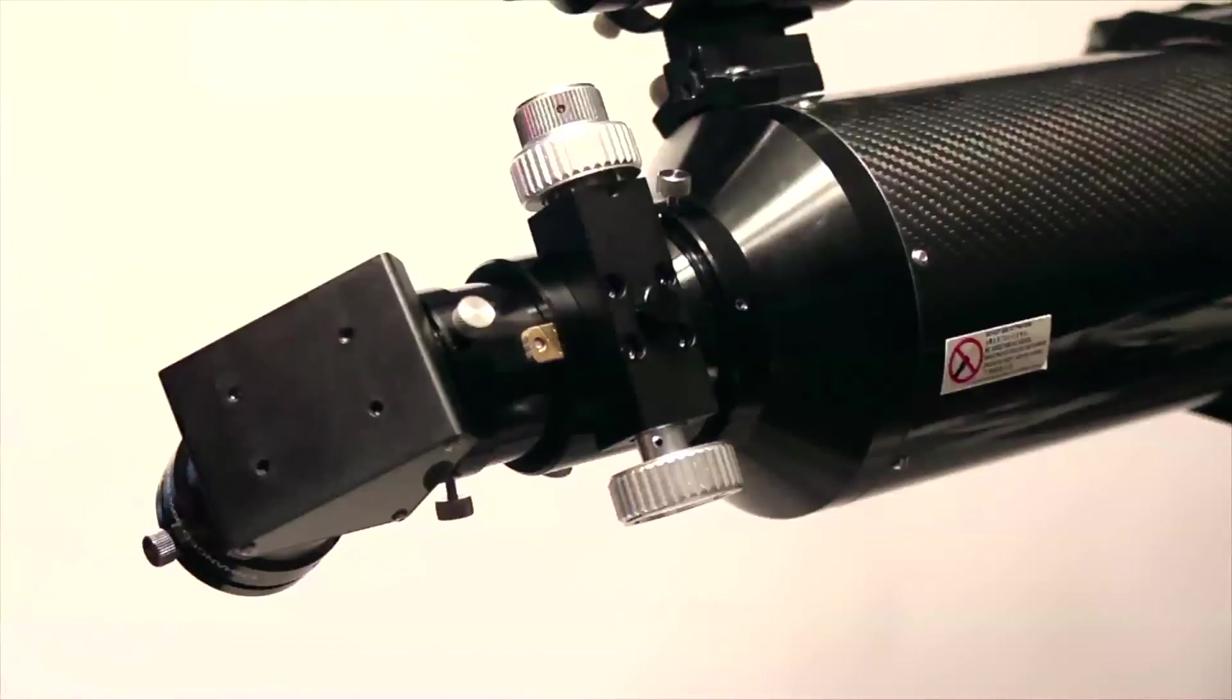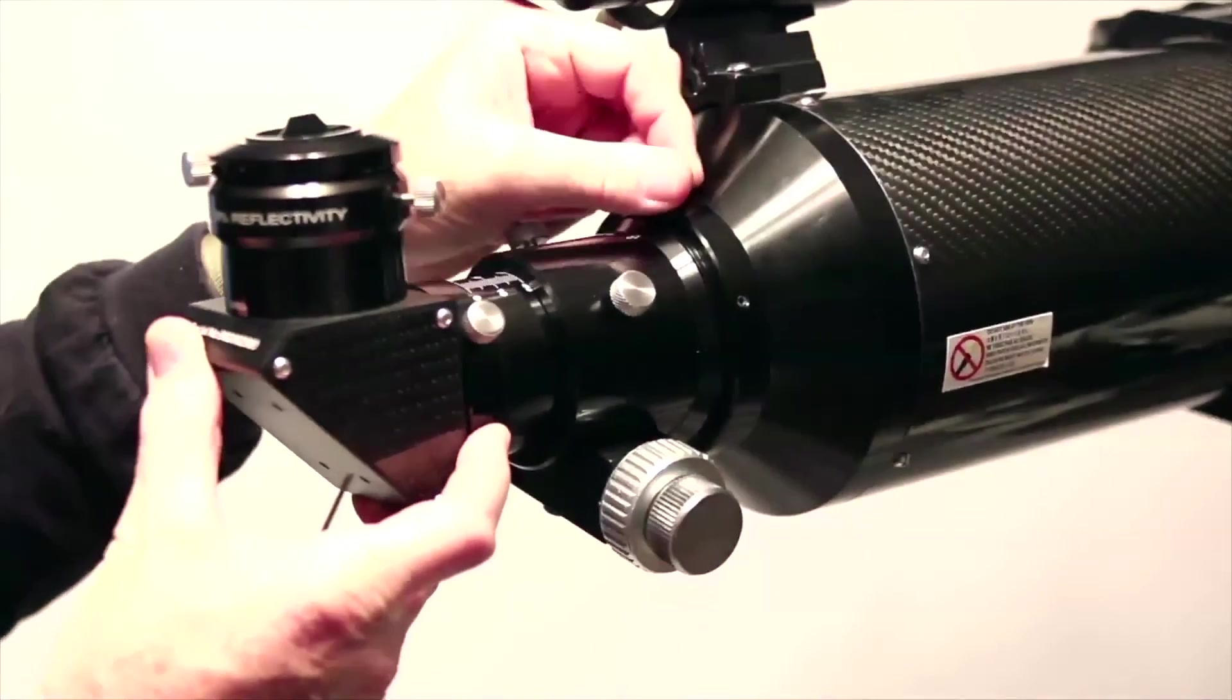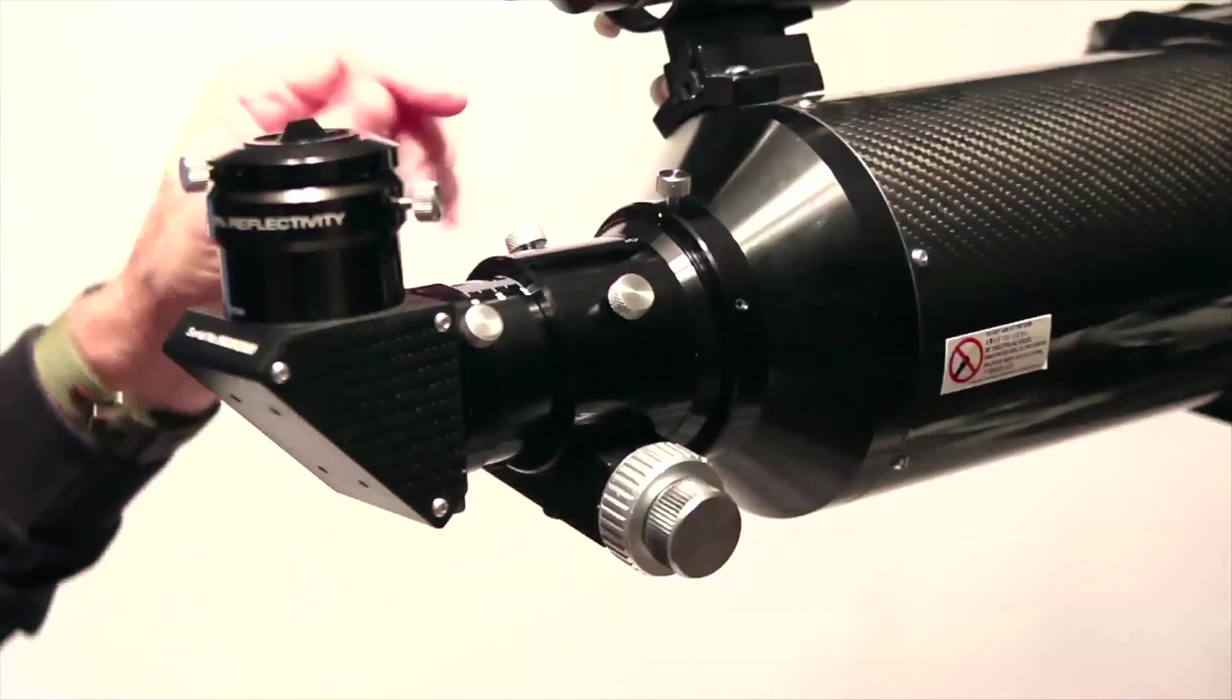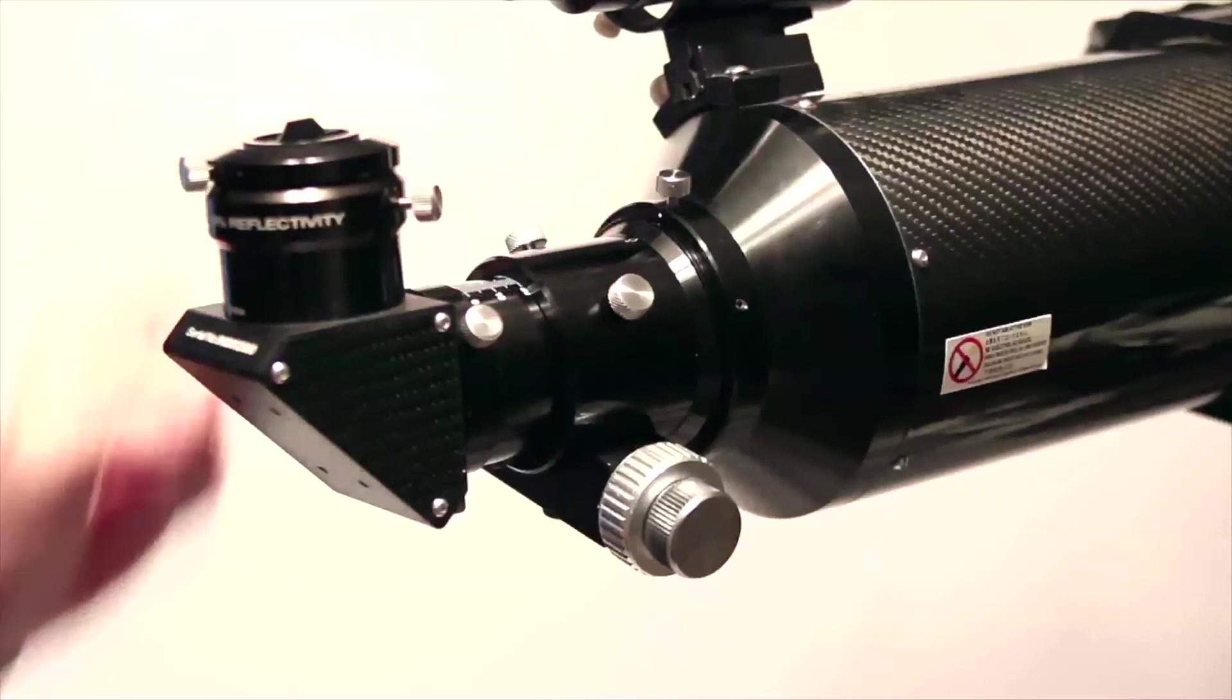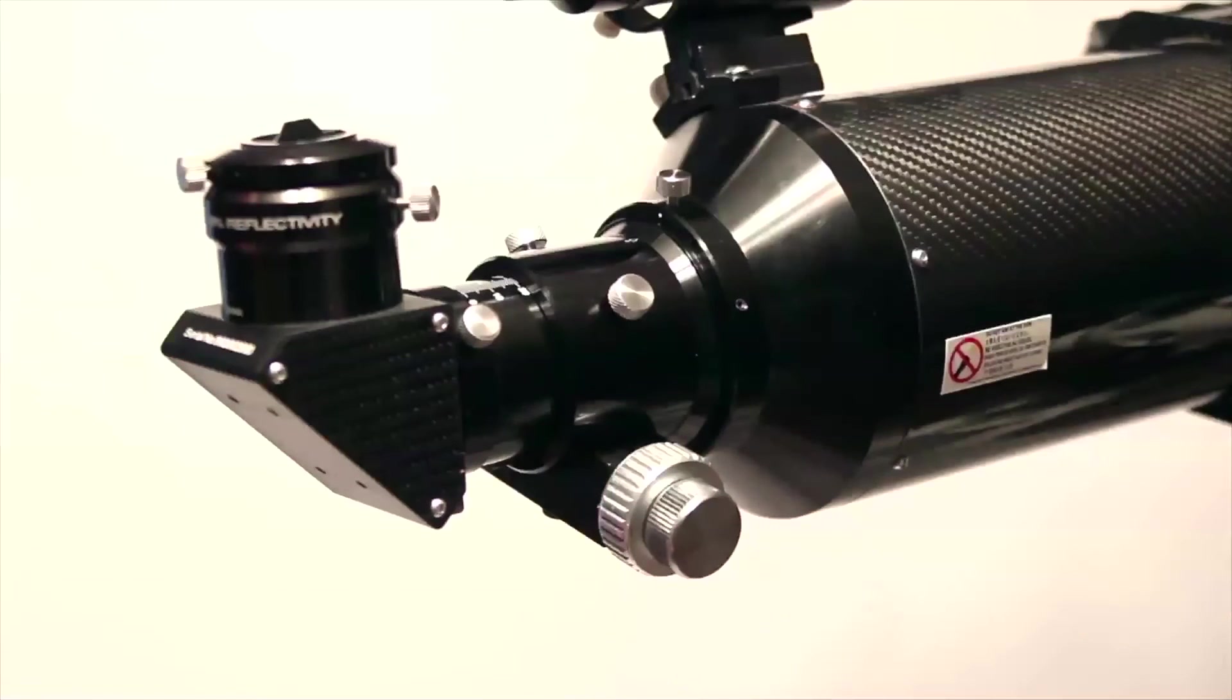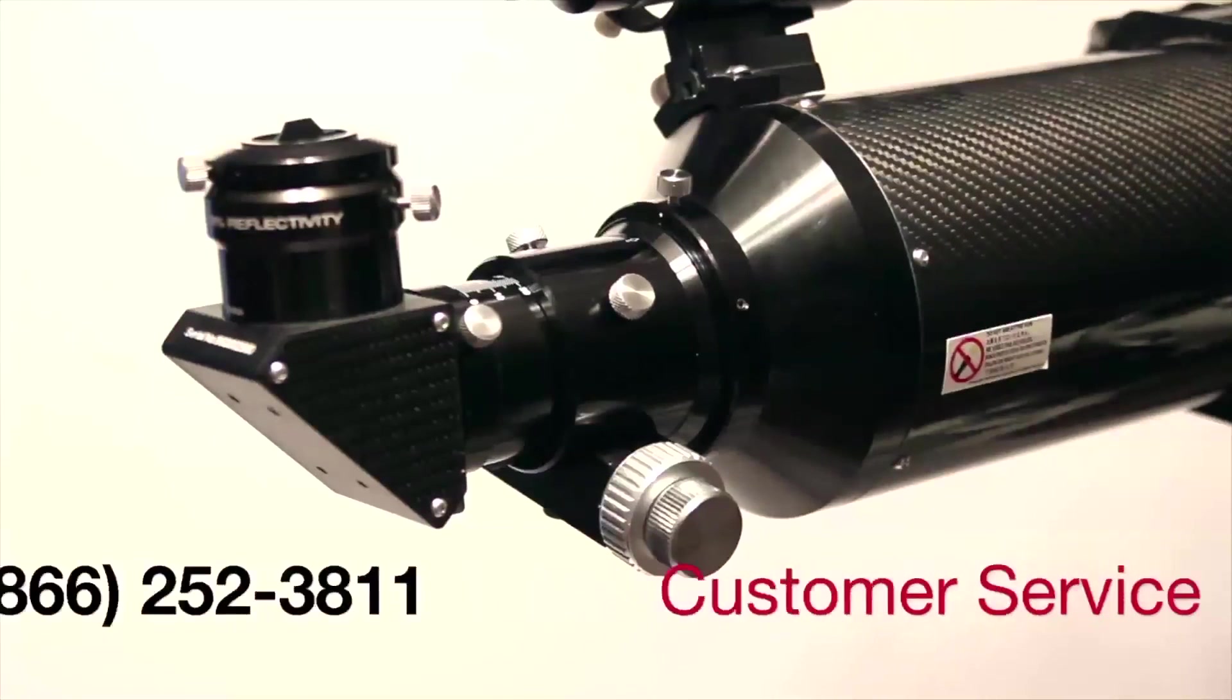So those are the primary adjustment screws on the focuser. The ones that you'll find that you'll use the most are these three control screws for the focuser and the tension screws here, and of course you'll use the knobs to do your focusing. That should help you maintain the focuser to its most efficient use, and if you have any questions you can always call us at our customer service department in our offices in Springdale, Arkansas. Hope that was helpful. Thank you.